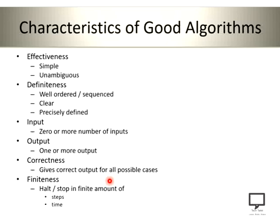The next characteristic is finiteness. What do we mean by finiteness? Your algorithm or program should halt or stop in a finite number of steps and in a finite amount of time. After ending n number of steps — a finite number of steps — your algorithm should get stopped or it should halt. The execution of your algorithm should halt, it should stop, and it should give the correct results within a specific time. These are the things we consider under finiteness of the algorithm.